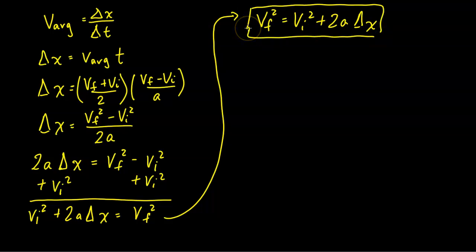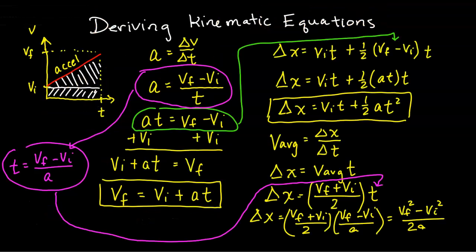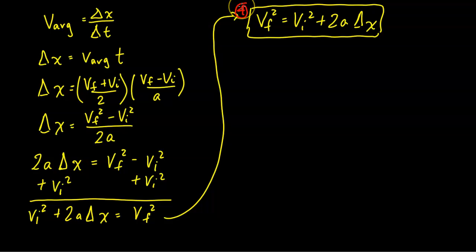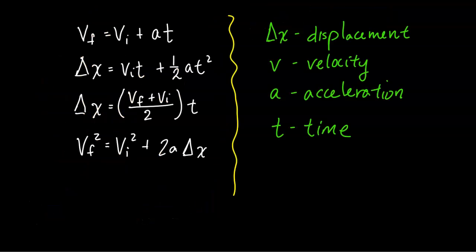That is actually the fourth kinematic equation, written as v_f squared equals v_i squared plus 2a·delta_x. Let's recap all four kinematic equations: the first is v_f equals v_i plus a·t; the second is delta_x equals v_i·t plus one-half·a·t squared; the third is delta_x equals (v_f plus v_i) divided by 2 times t; and the fourth is v_f squared equals v_i squared plus 2a·delta_x.